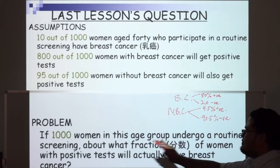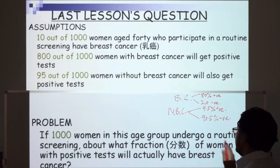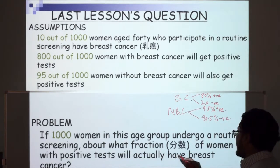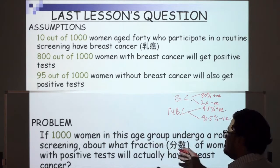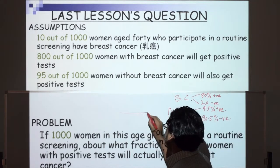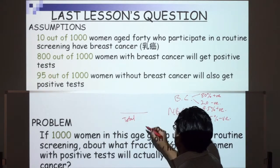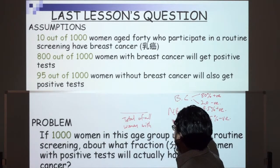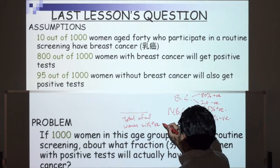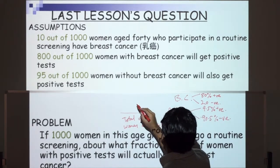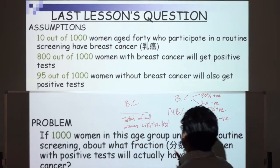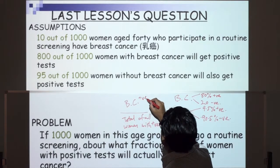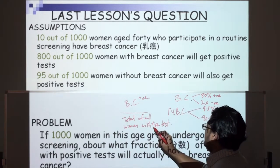The problem: if 1,000 women in this age group undergo a routine screening, about what fraction of women with positive tests will actually have breast cancer? What they're asking for is the total of all women with a positive test divided by those who actually have breast cancer — specifically, breast cancer women with a positive test out of the total women with a positive test.